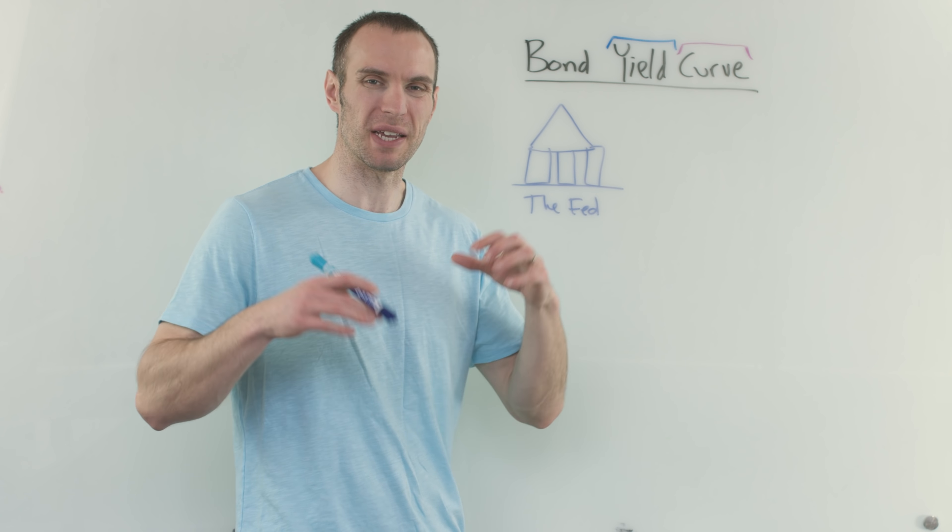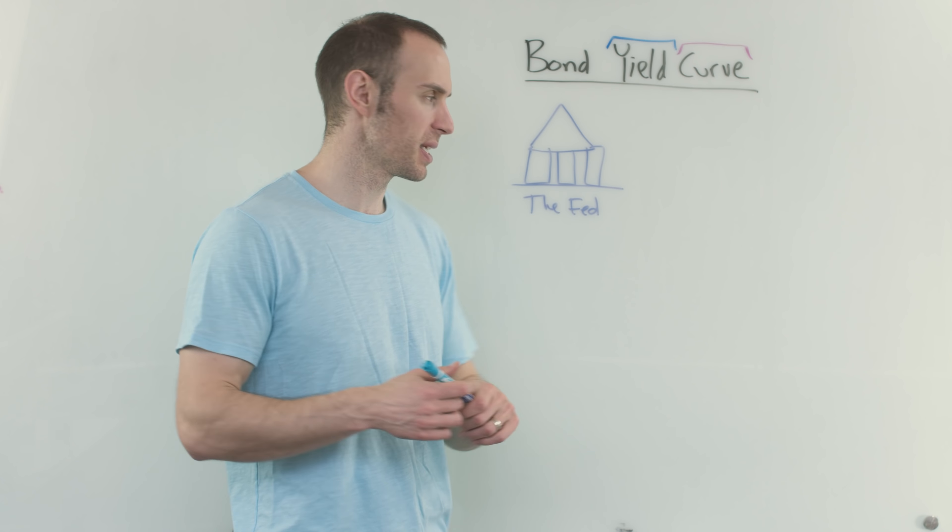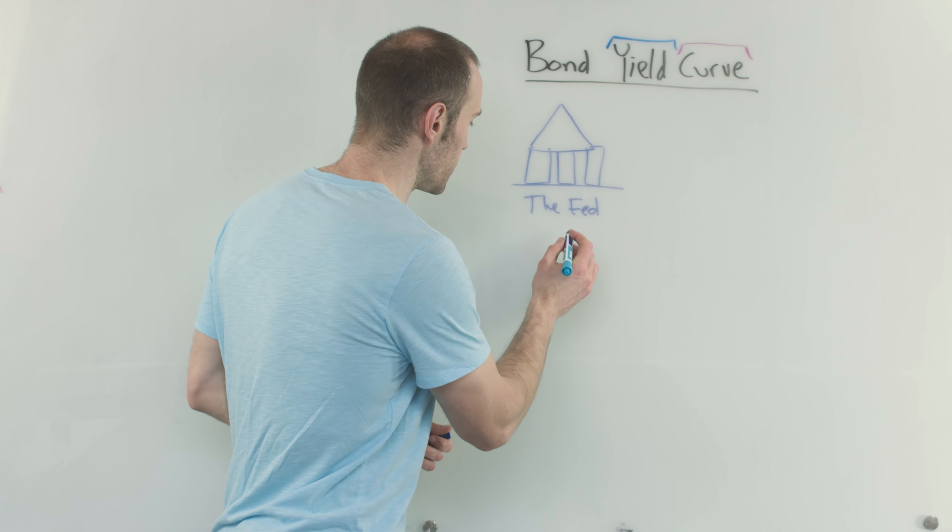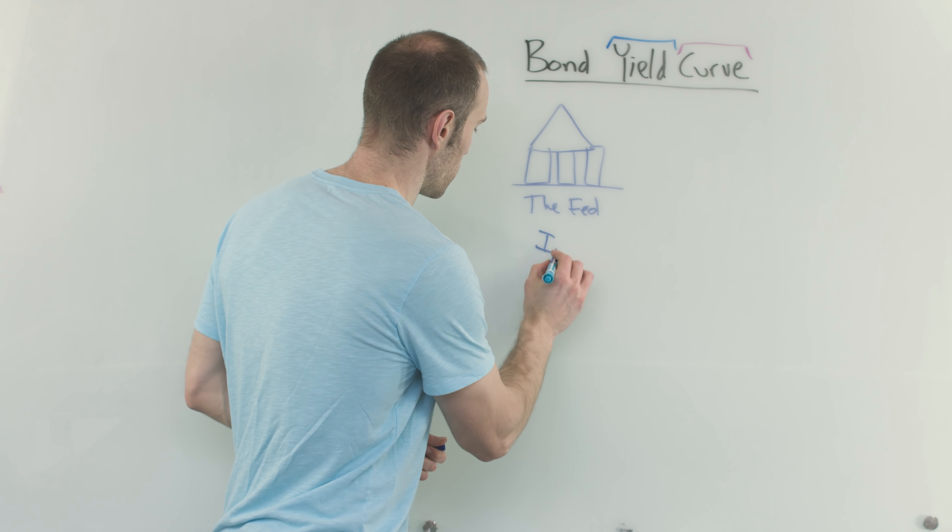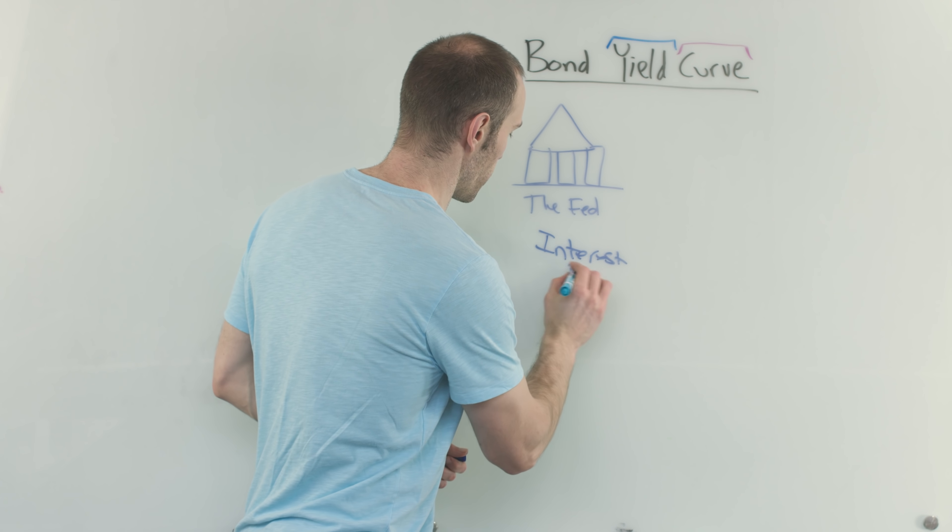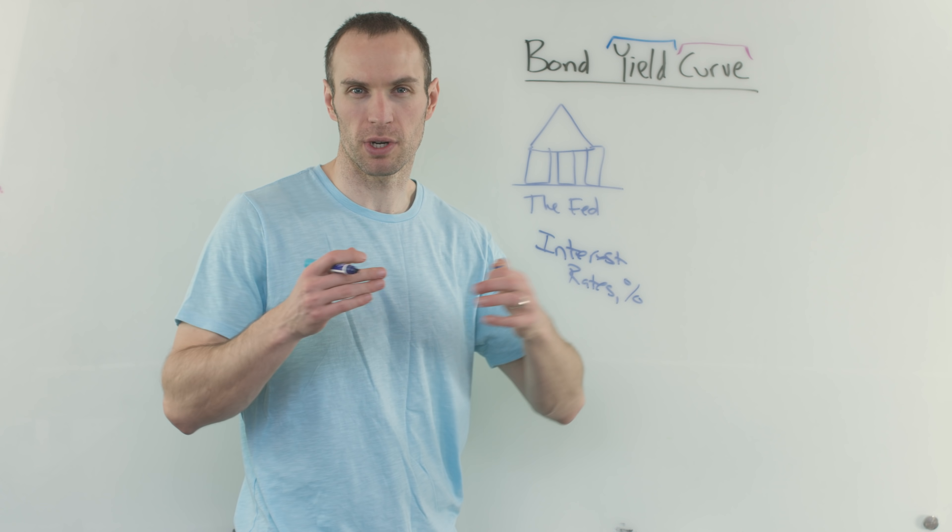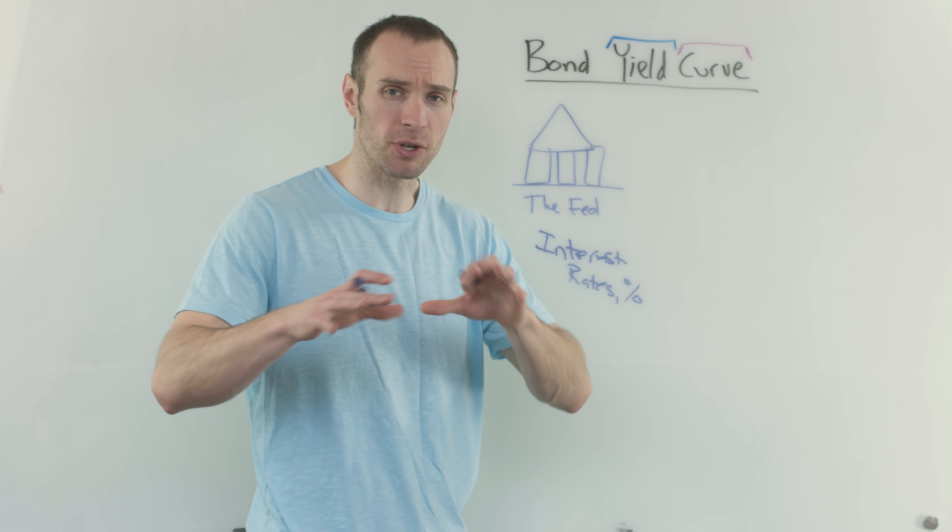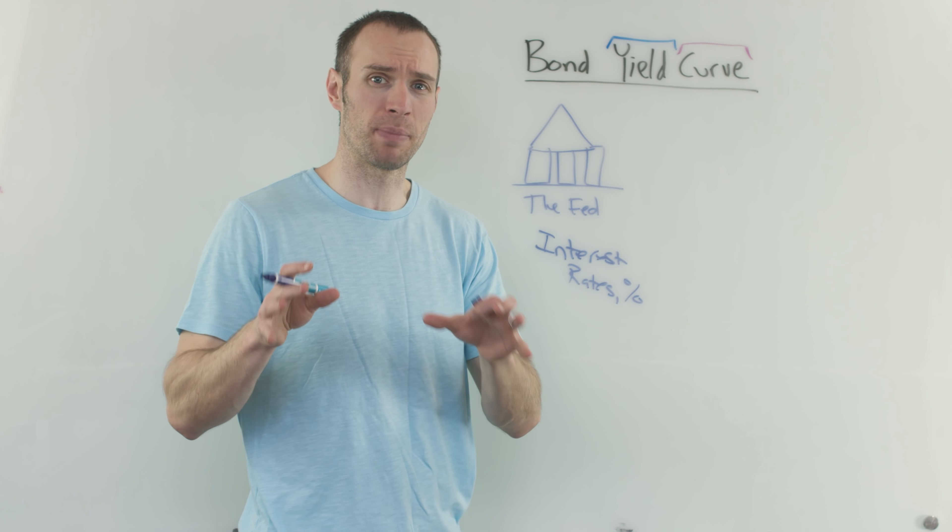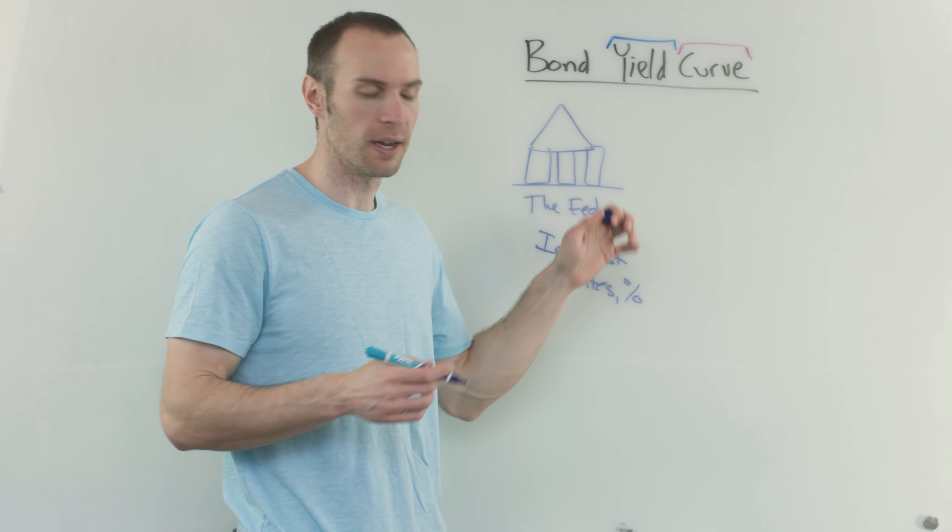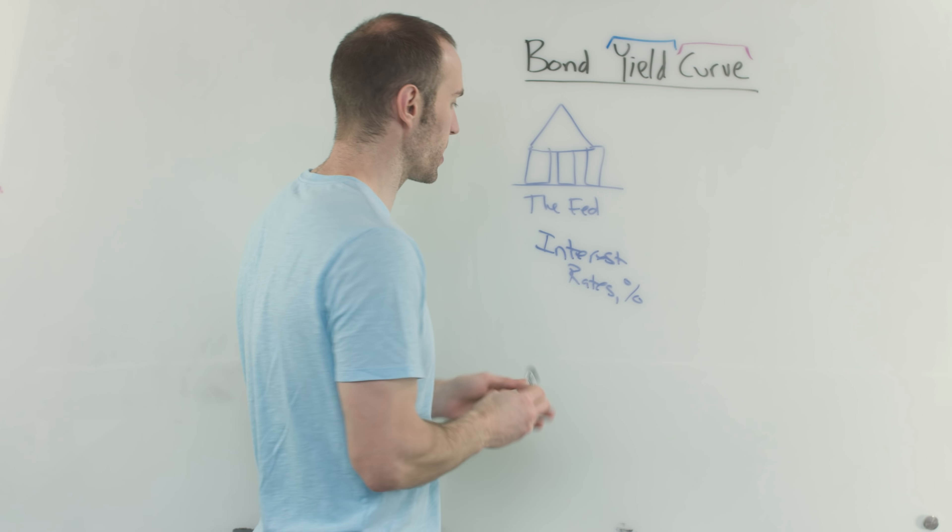Risk number one comes in the form of interest rates. Interest rates being dictated by the government institution known as the Federal Reserve, or in kind of street lingo, the Fed. So the Fed is in charge of interest rates, which are expressed as a percentage. They make decisions, and that's what's gonna affect mortgage rates, that would affect a car payment rate, credit card. Anything that has interest attached to it is going to be influenced by this government body known as the Federal Reserve, the Fed.